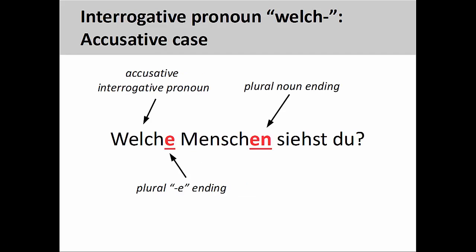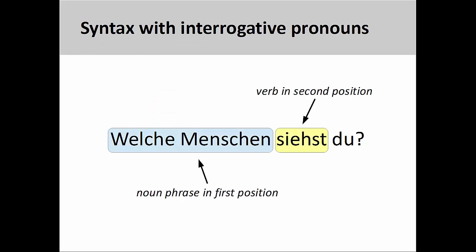We do need to be a bit careful when distinguishing between feminine and plural endings. Although the -e ending could possibly be either feminine nominative or accusative, the noun ending -en and the presence of 'du' indicates that 'welche Menschen' must be plural accusative and the direct object of the verb.